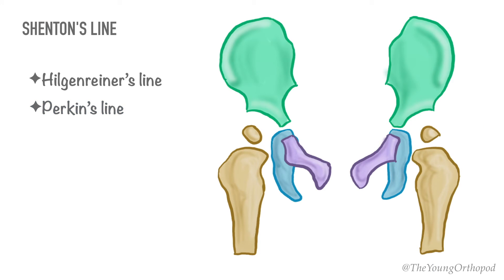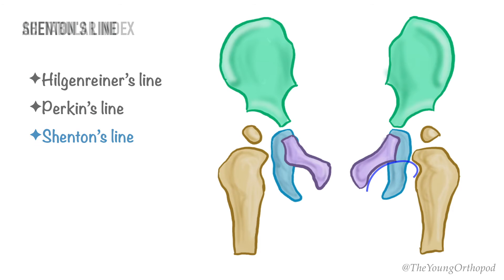The Shenton's line is a curved line that begins at the lesser trochanter, goes up to the femoral neck, and connects to a line along the inner margin of the pubis. Shenton's line is a smooth line in a normal hip. This line is non-continuous when the affected hip is subluxated or dislocated.